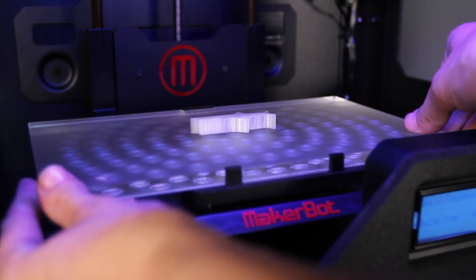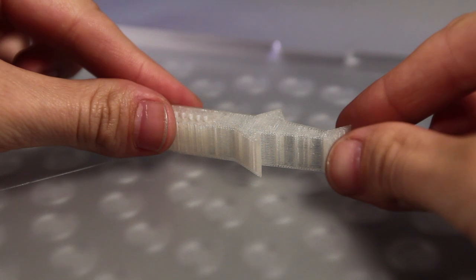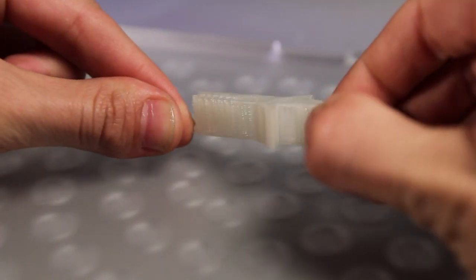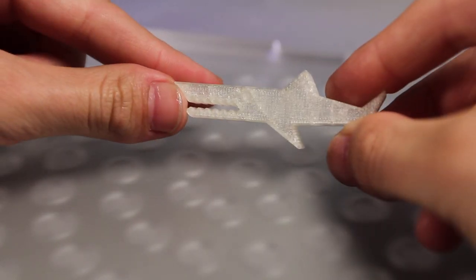Once you've finished making your first thing, take the build plate out and pull your object off the plate, like this. You may have to rock it back and forth a bit and use some force.